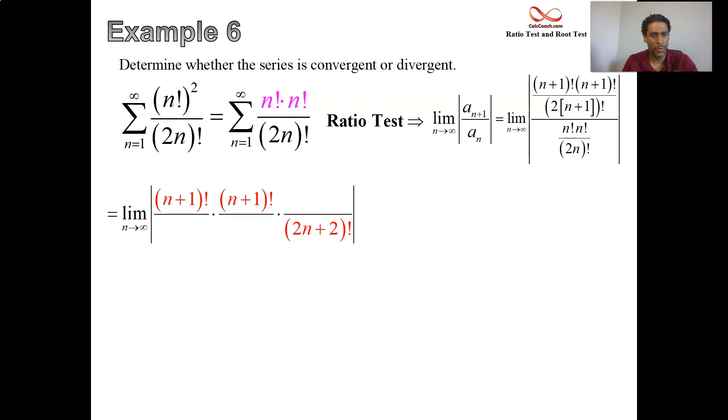So these are the n plus 1 terms. What happens with the a sub n terms is they get reciprocated, so they end up opposite of where they were originally. Underneath the n plus 1 factorial we have an n factorial, and another one underneath the second one there. On top of the 2n plus 2 quantity factorial we'll have a 2n factorial.